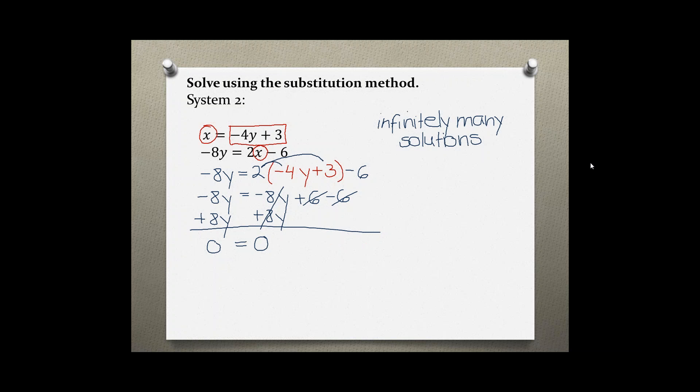This means that the two lines representing these equations would be exactly on top of each other, basically being the very same line. So every solution from one equation would also be a solution to the second equation.